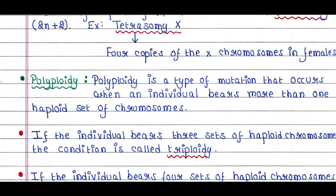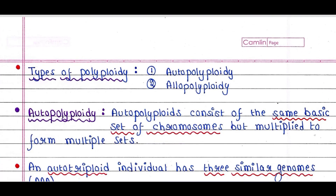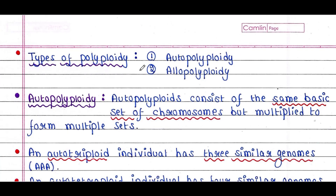Next we will talk about polyploidy. Polyploidy is a type of mutation that occurs when an individual bears more than one haploid set of chromosomes. We normally have 2 sets of chromosomes and are called diploid. If an individual bears 3 sets of haploid chromosomes, the condition is called triploidy; with 4 sets, it is called tetraploidy. There are two types of polyploidy: autopolyploidy and allopolyploidy.